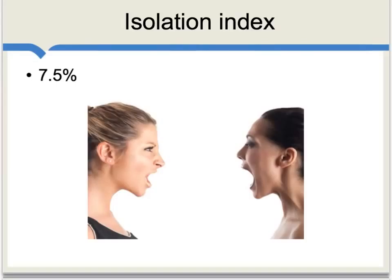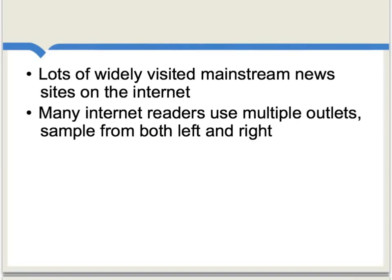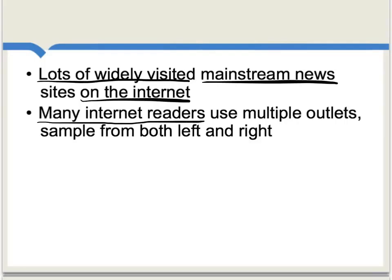The isolation index for the Internet is measured at about 7.5%, and in my view, that's actually pretty low. There are at least two main reasons. First, there are lots of widely visited mainstream sites, like CNN.com, which are visited by both liberals and conservatives. Second, there are also many Internet readers, typically quite sophisticated, who use multiple outlets for their news and visit a wide variety of sources. Those people tend to sample from both the left and the right, and that also contributes to ideological diversity in patterns of Internet consumption.